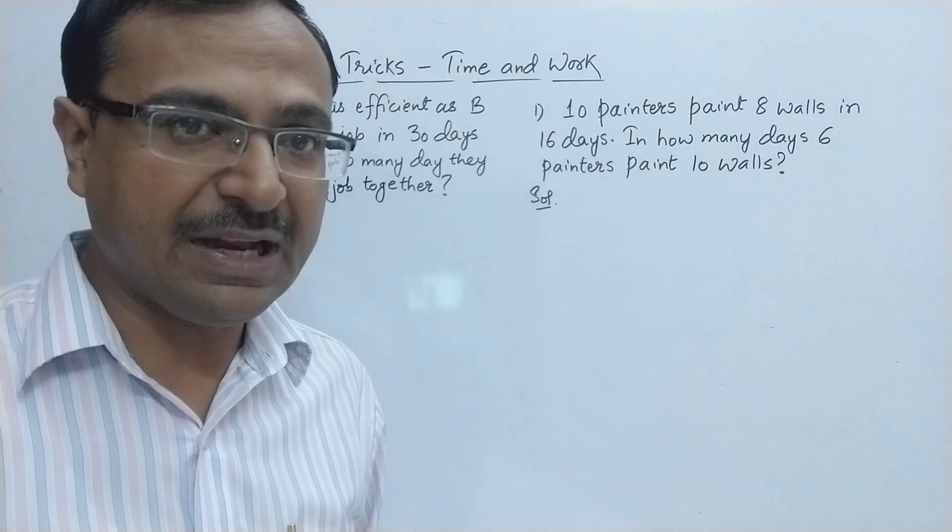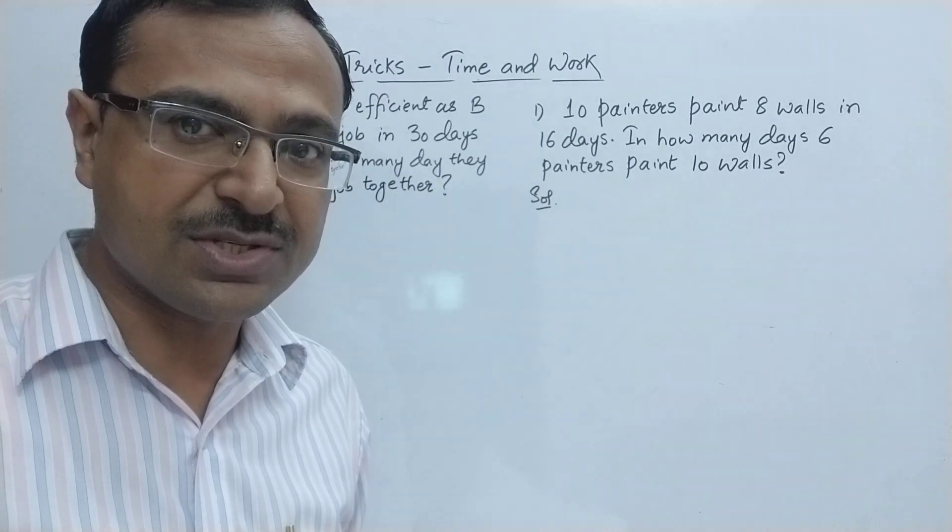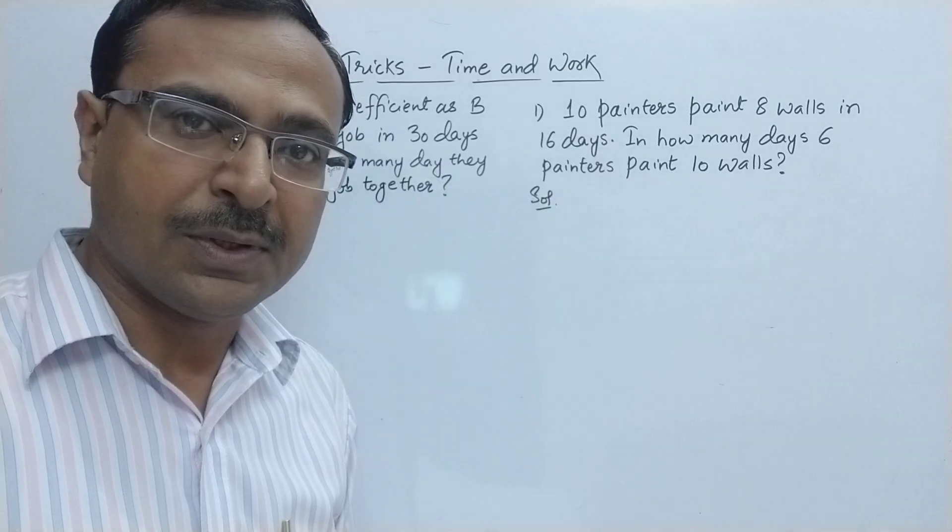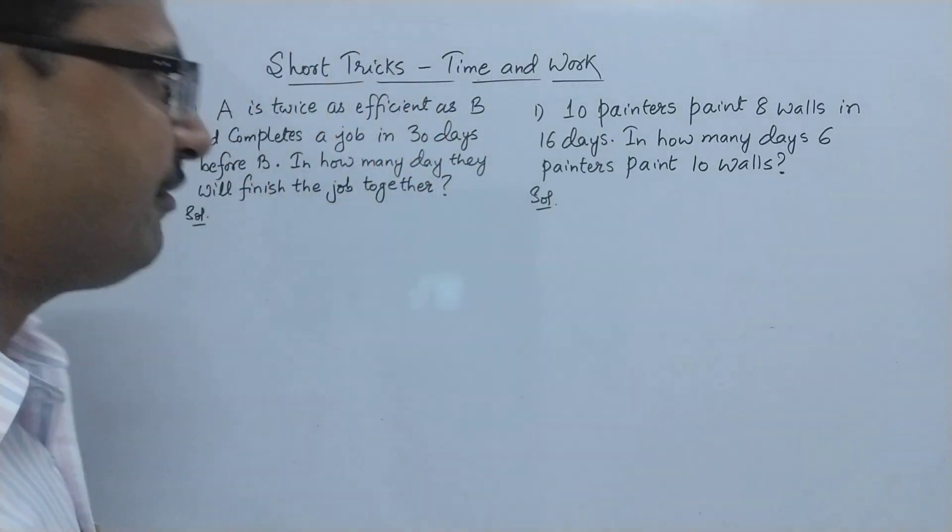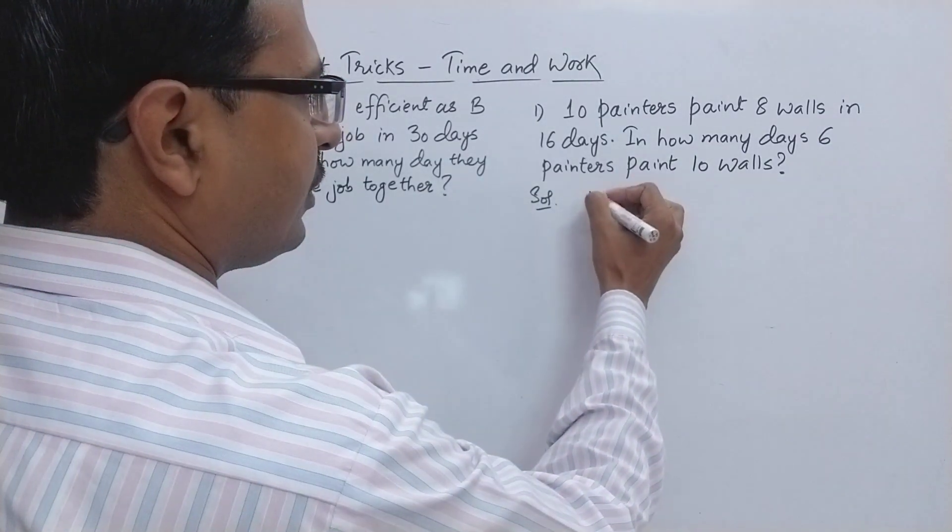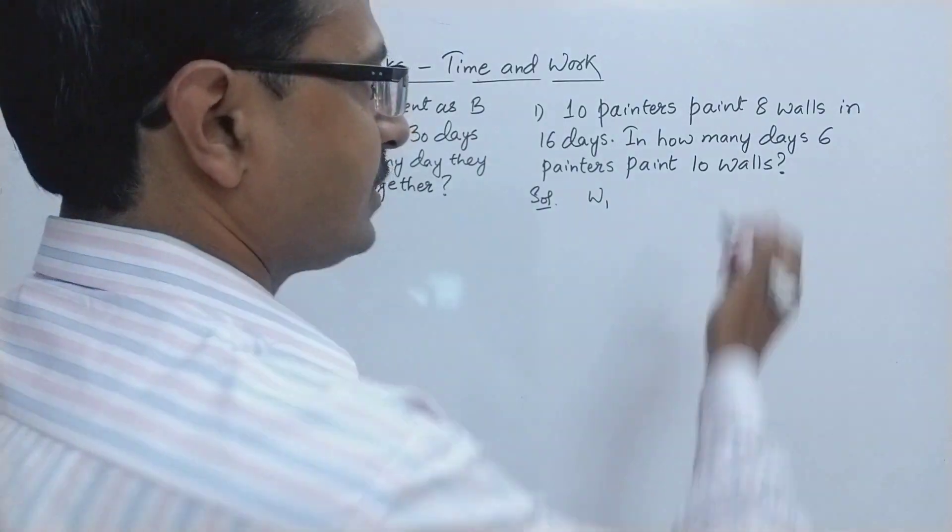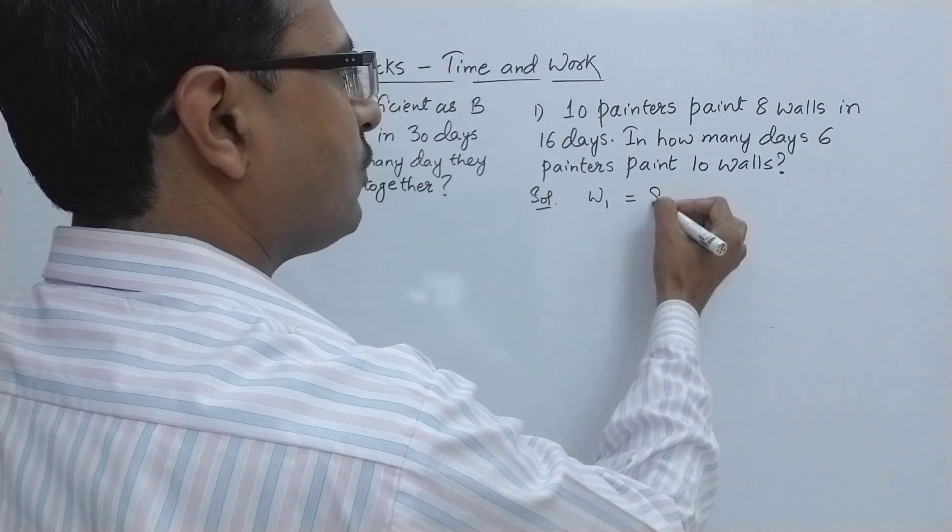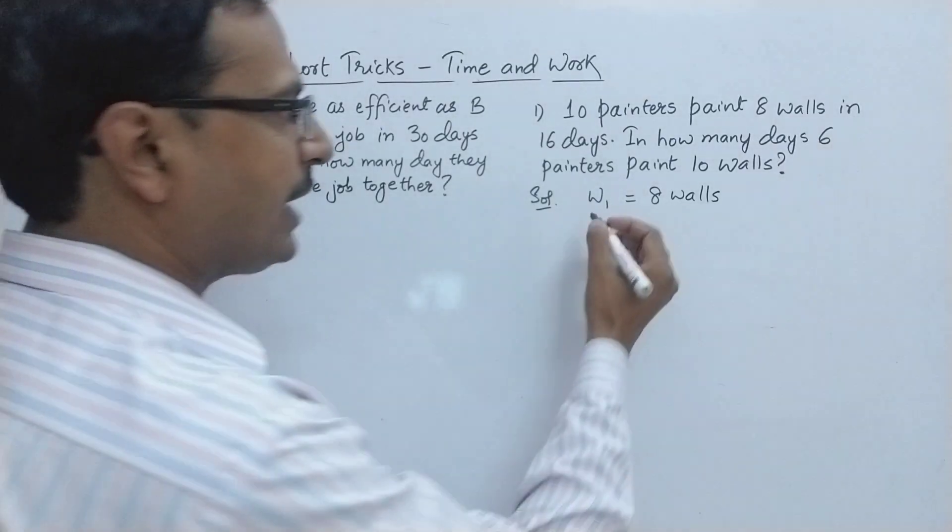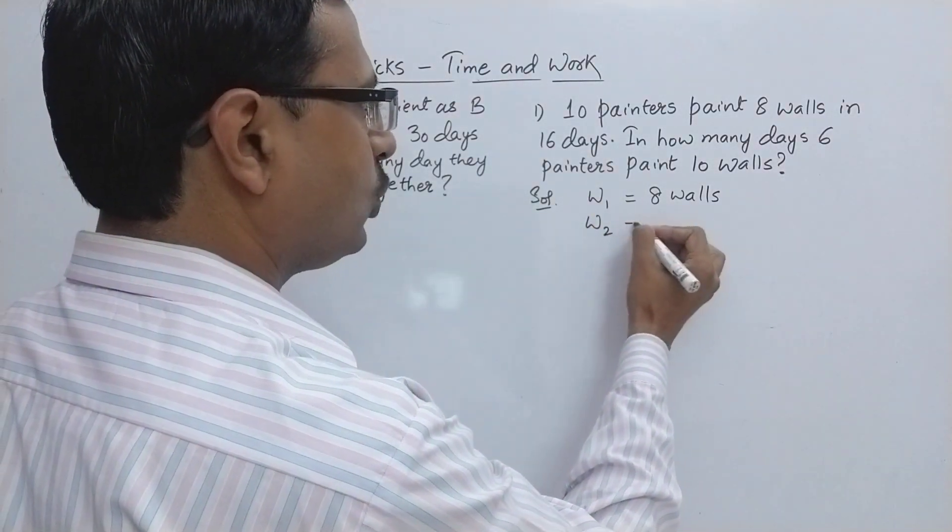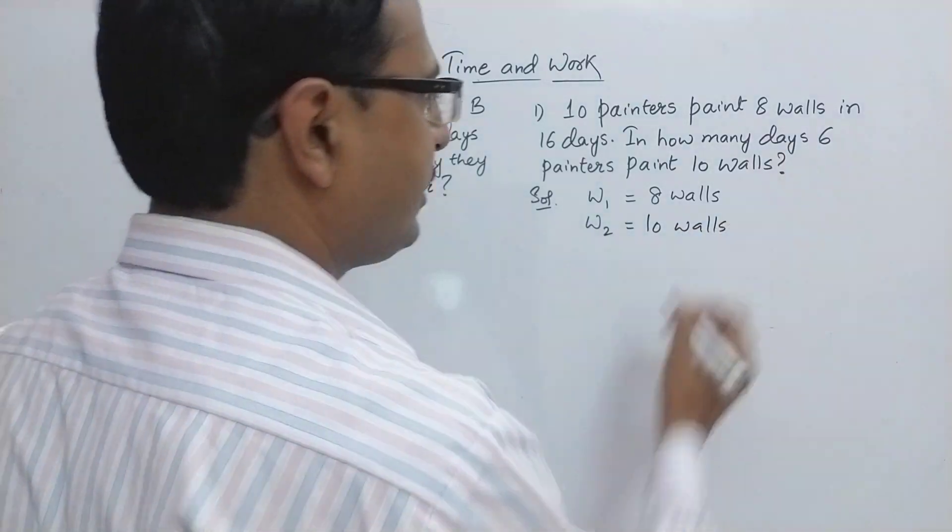But in competitions you have very less time so you need to be very quick in answering this question. So let's see how we can solve this very easily. Whenever we have a particular work W1 to be done, in this case 8 walls, painting 8 walls is the first work to be done. Likewise we have a work W2, here in this case it is 10 walls to be painted, so that is the second work.